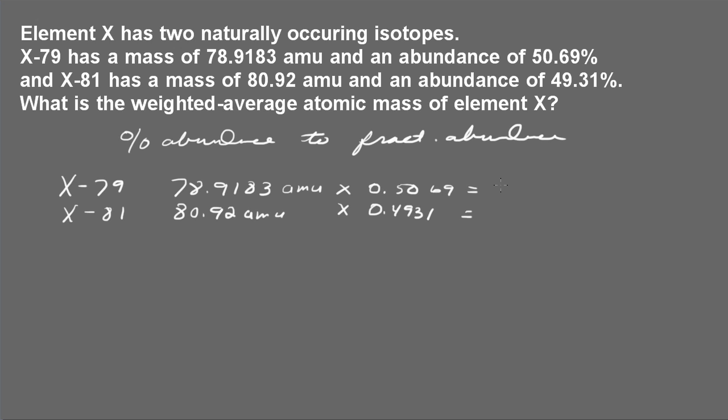So I'm going to multiply this first one here, 78.9183 times 0.5069, and I end up with 40.00369 atomic mass units. And then I multiply the second one and I end up with 39.90165 atomic mass units.